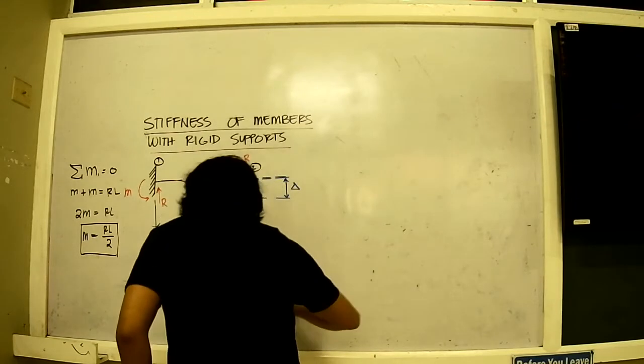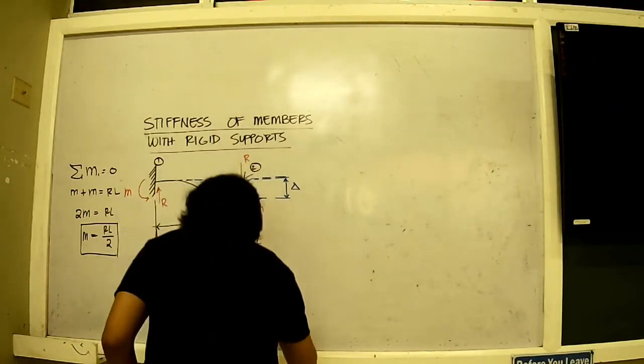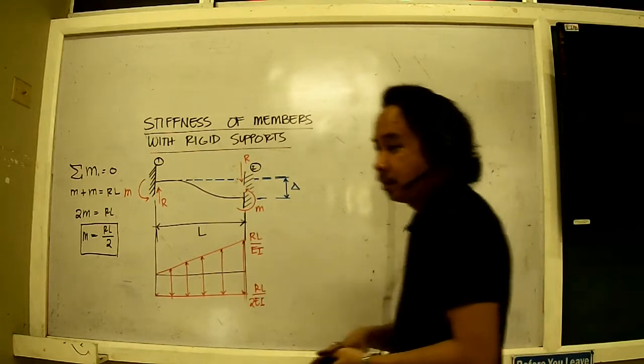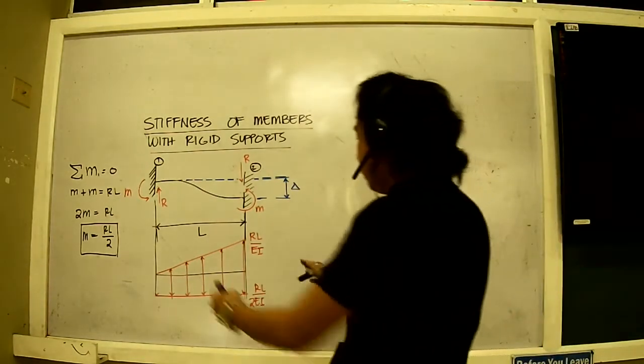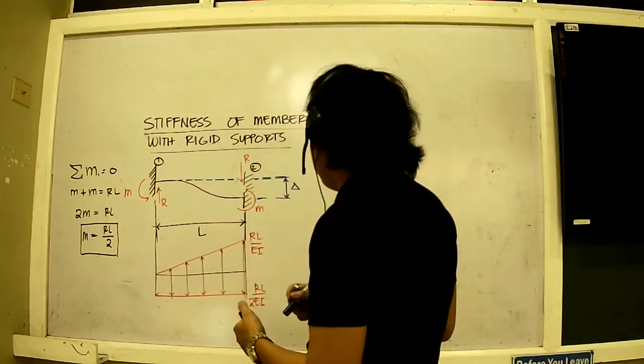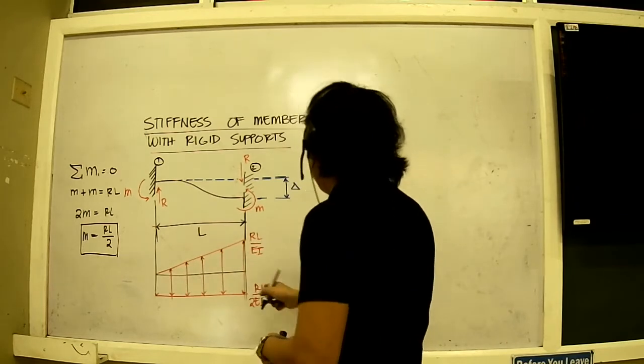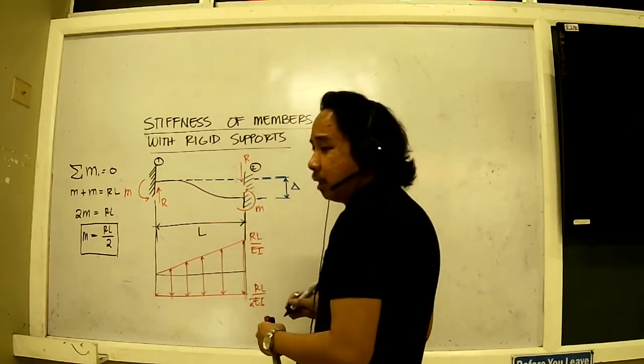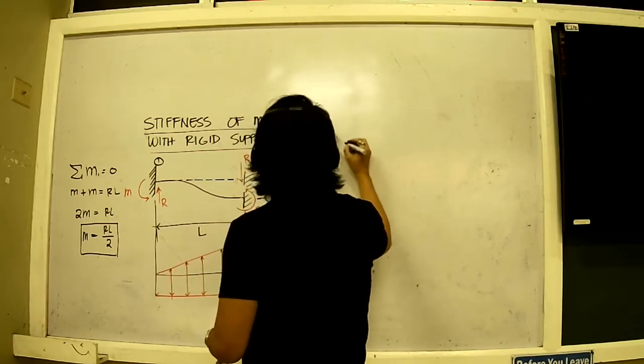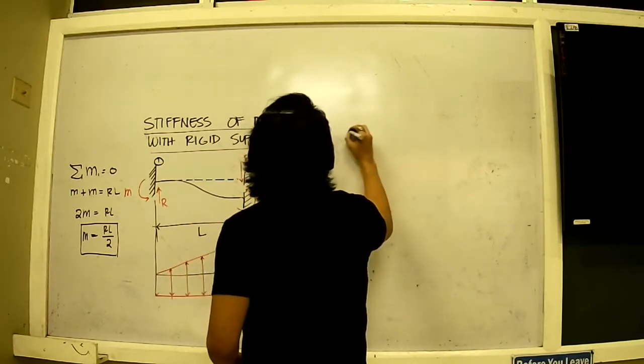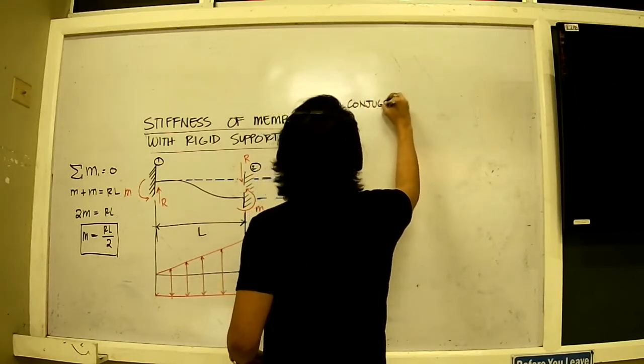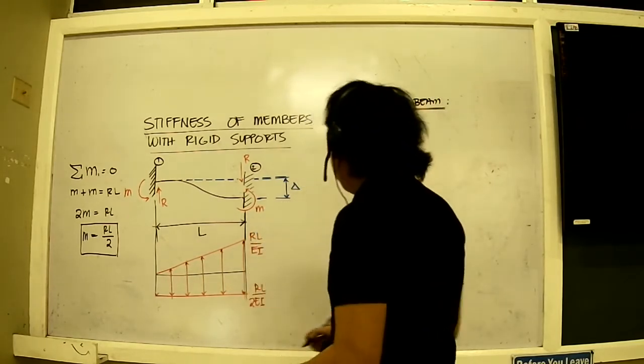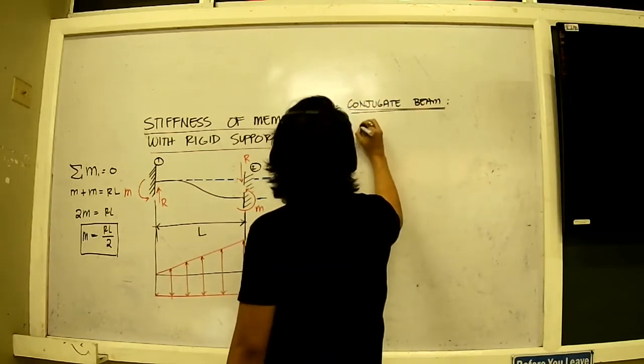With that in mind, I would like to change moment here to RL over 2, so this is RL over 2EI. So we have this classic expression diagram. From this I would like to play with this particular conjugate beam expression, and I would like to solve for the deflection here. Of course we know the deflection is equal to delta, but then I would like to take advantage of this figure here.